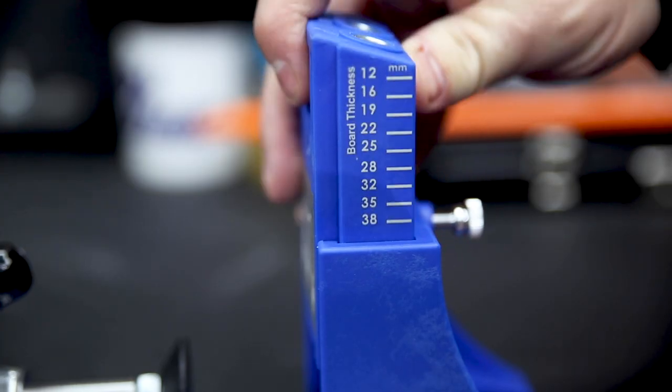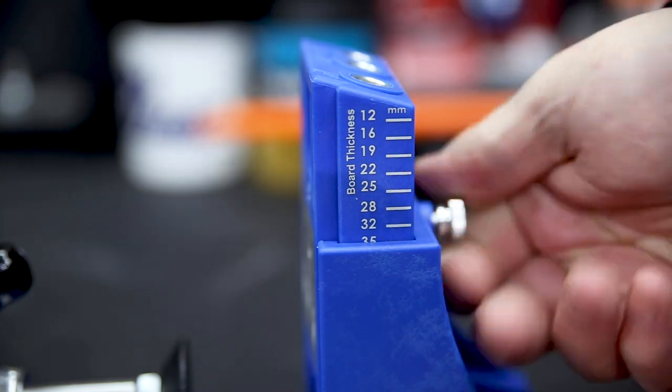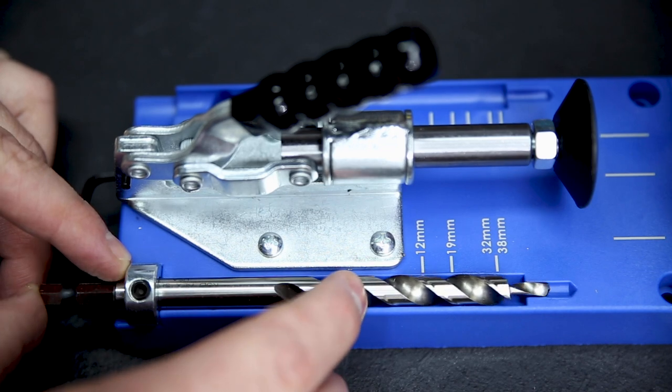Then position the stop collar so that the shoulder of the drill lines up with the same mark on the guide as well. The three holes in the jig give you a variety of options in terms of spacing.